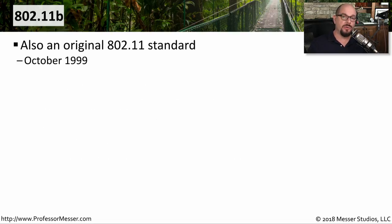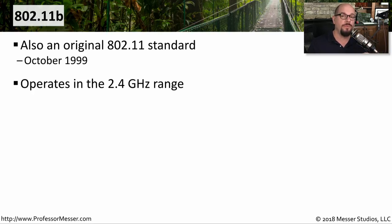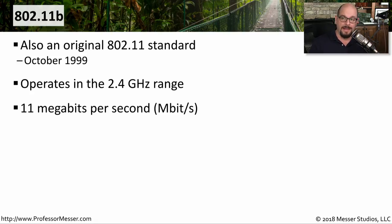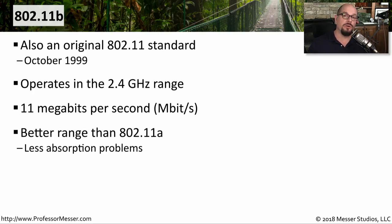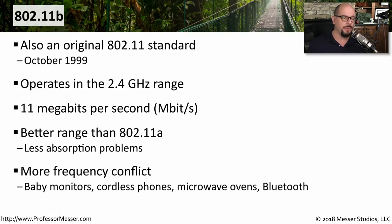The 802.11b standard was released simultaneously with 802.11a in October of 1999. It uses the 2.4 gigahertz range to communicate. 802.11b communicated at a maximum throughput of 11 megabits per second, significantly different than the 54 megabits per second available with 802.11a. But 802.11b gave us effectively longer ranges, because those 2.4 gigahertz frequencies would bounce off of objects rather than being absorbed. One challenge, however, is there are a lot of other devices communicating at that frequency — cordless phones, baby monitors, and Bluetooth communications all operate at 2.4 gigahertz and could potentially create conflicts.